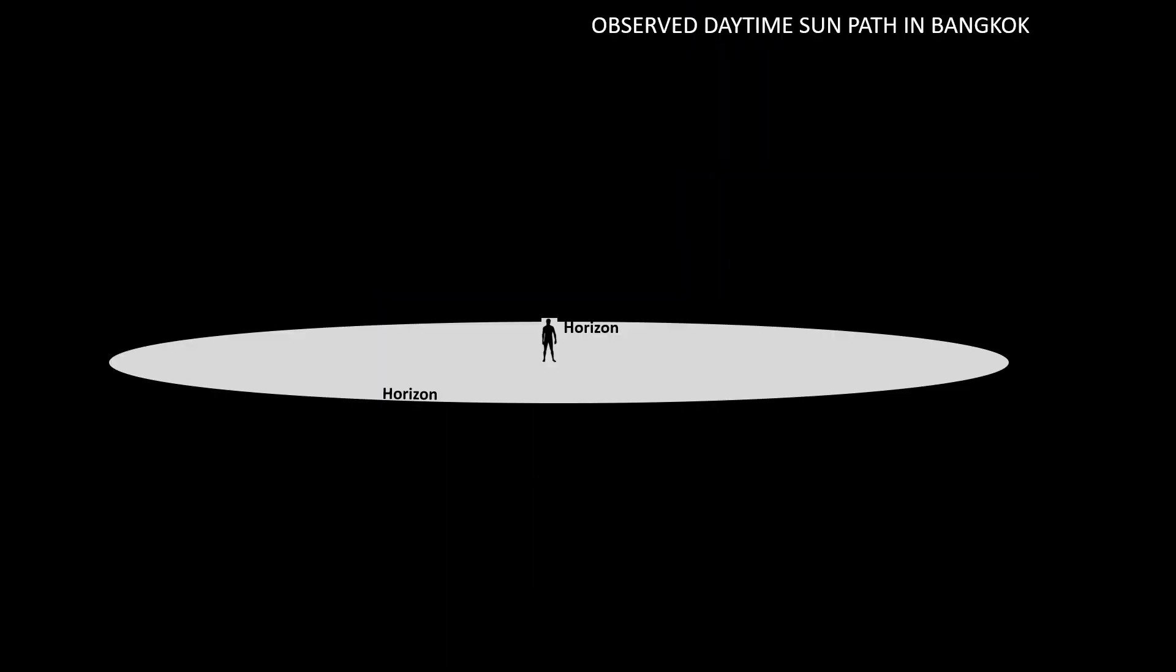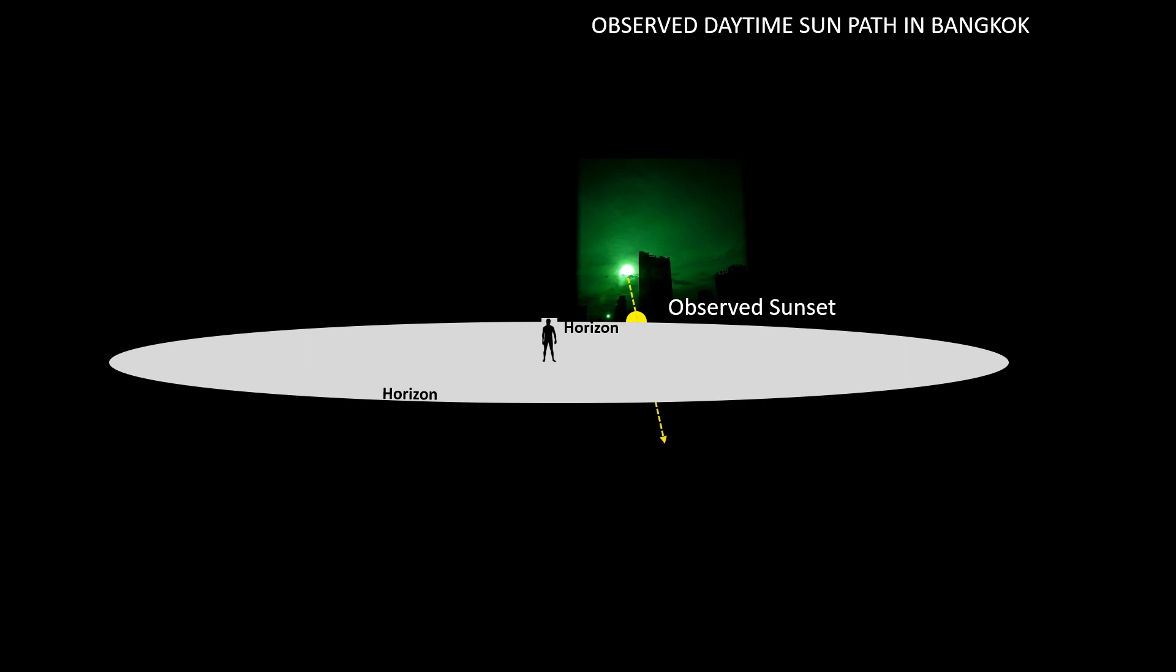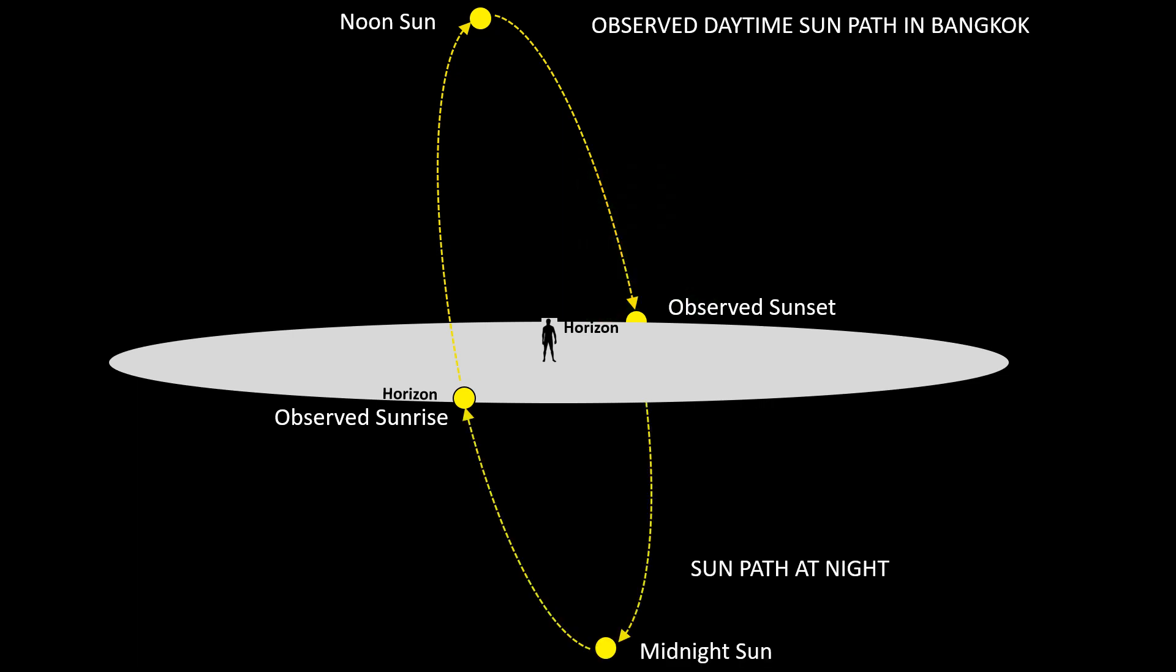Now I'm going to show you the observed daytime Sun path that I see in Bangkok. And again I'll use this representation of an observer and the circle will represent the horizon around him. This is the observed angle of the Sun path at sunset, the angle of the Sun path at sunrise. When you live in the tropics the noon Sun is always high overhead. And the path of the Sun that I see every day is at a very steep angle in relationship to the surface of the Earth. And since that Sun does not change direction at the horizon it goes below me at night as it returns to the east to rise again in the morning.